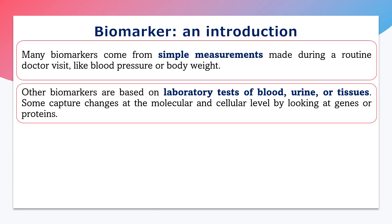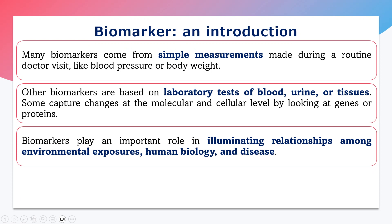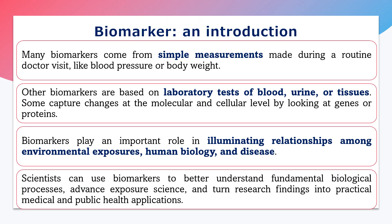These specific tests may be for biomolecules like carbohydrates, proteins, DNA, or other things, and sometimes we go up to the molecular level for genes as well. Biomarkers play an important role in illuminating the relationship between environmental exposure, human biology, and disease. Scientists also use these biomarkers for better understanding of fundamental biological processes or for further research into treatments. So these biomarkers have multiple uses.